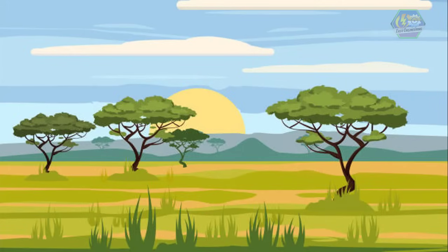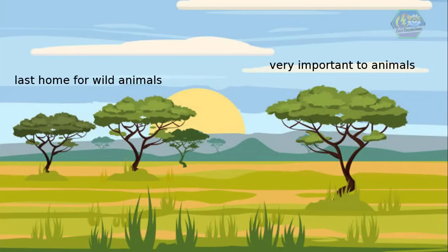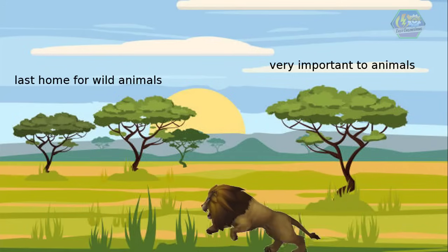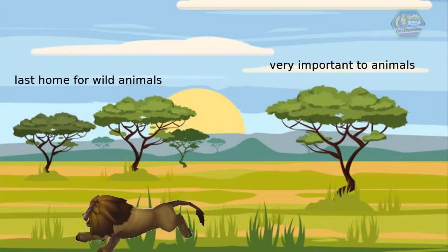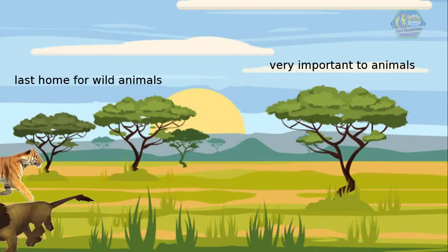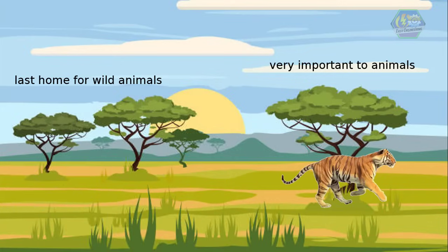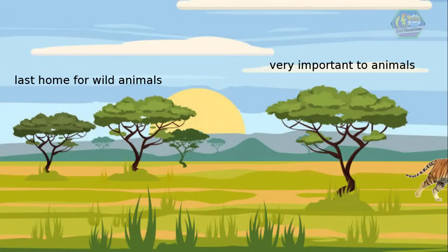Those are the three main types of grasslands. Grasslands are very important to animals, as this could be their last frontier — the last home for wild animals where humans don't interfere with how they live. Let's help preserve these grasslands and the wildlife, since there are quite a number of endangered species living there.